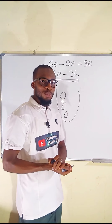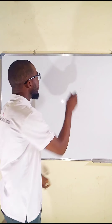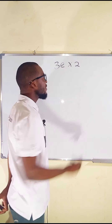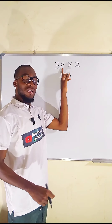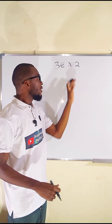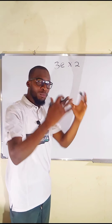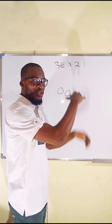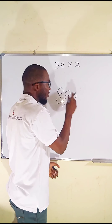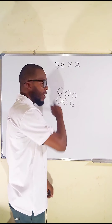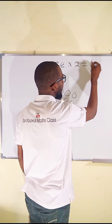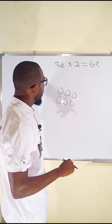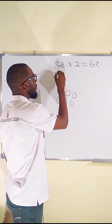Let's move on to multiplication. If you have 3e multiplied by 2 — suppose e is an egg — we have 3x times 2, meaning you should double the x. You double it, making six of them. So this is equal to 6x because we are asked to double it.